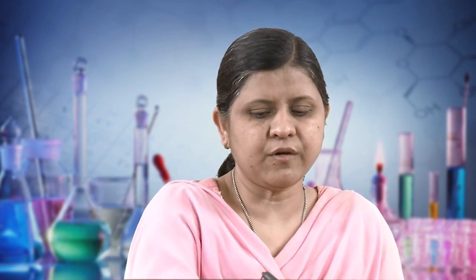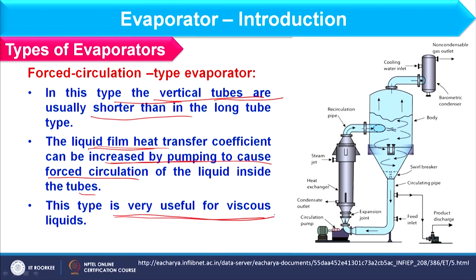The forced circulation evaporator is used specifically for fouling-tendency liquids and viscous liquids that cannot recirculate on their own. Vertical tubes are arranged and a pump causes forced circulation of the liquid inside the tubes, increasing the liquid film heat transfer coefficient. This type is used for viscous liquids.